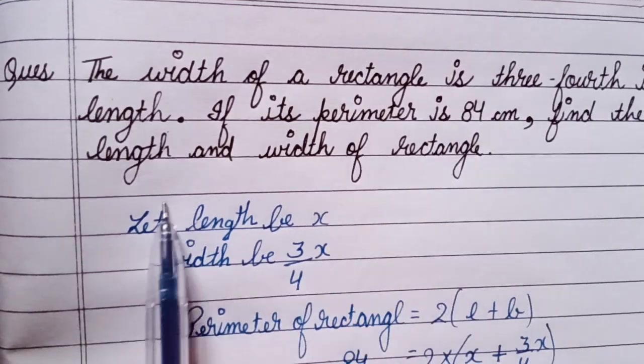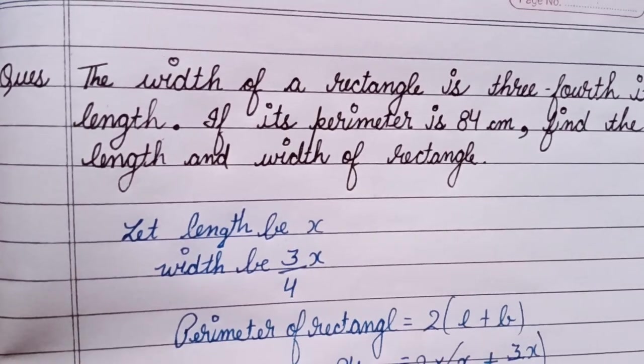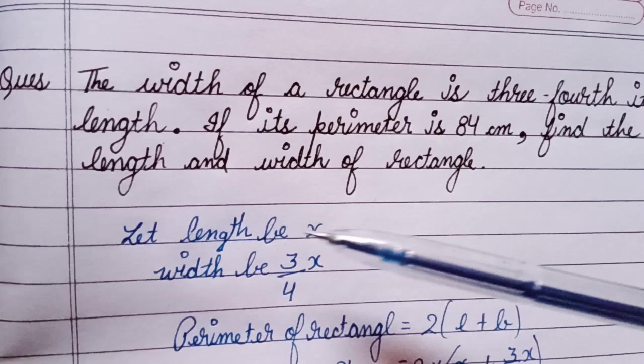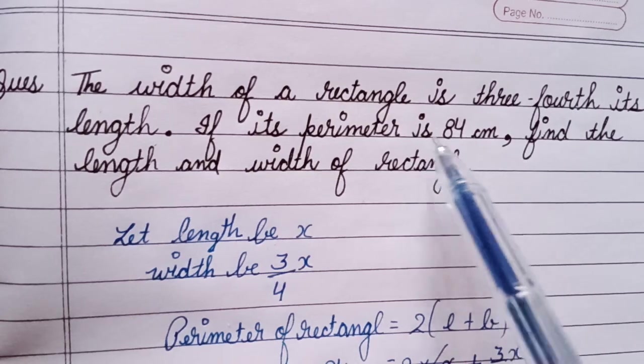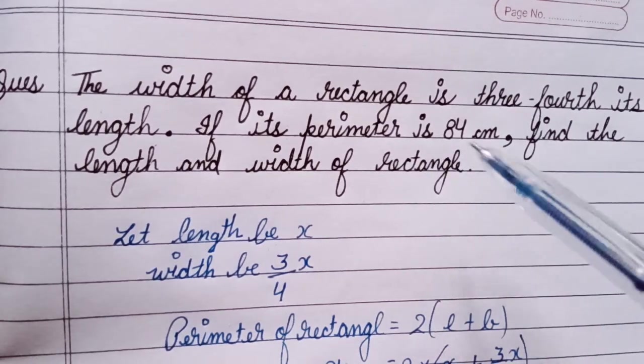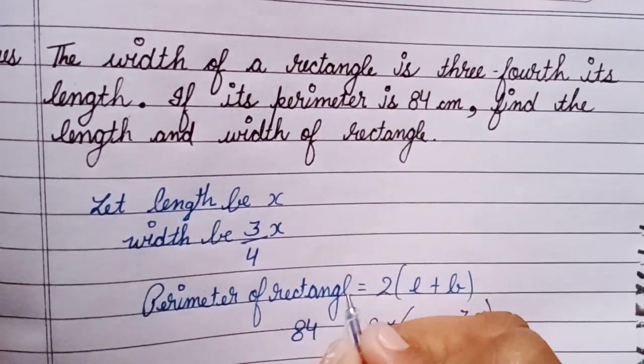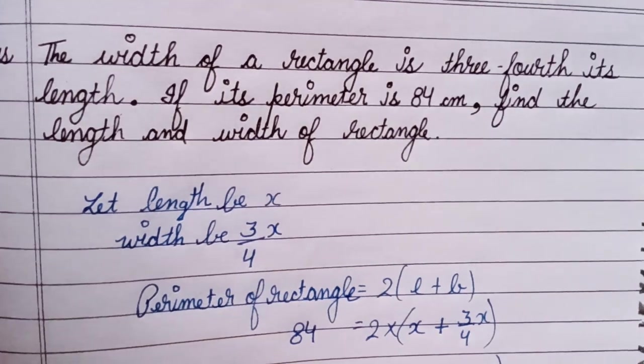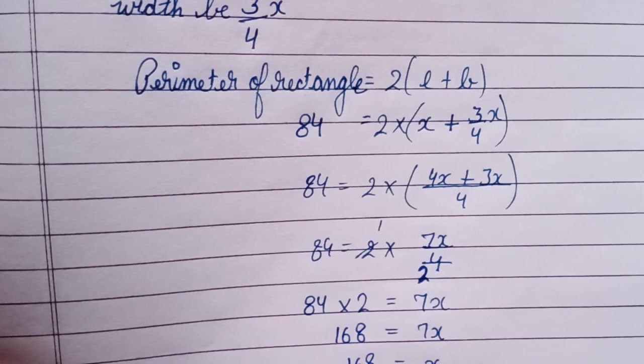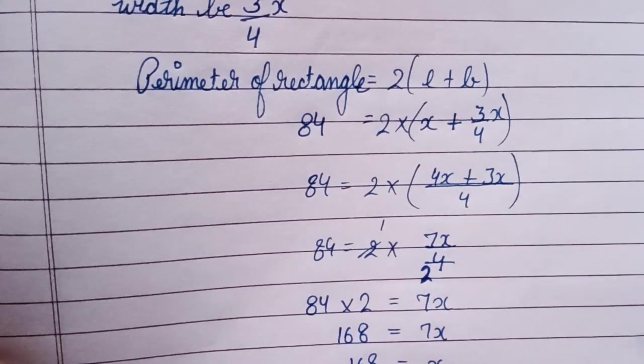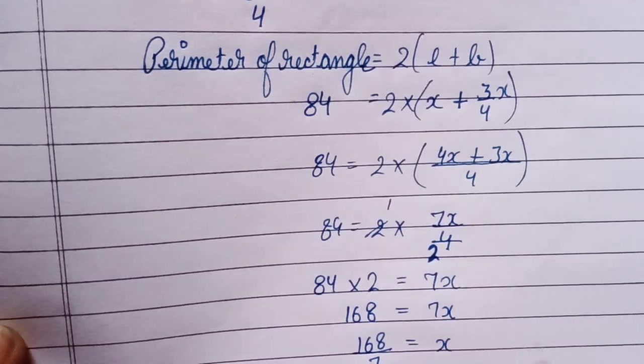If we have length x, then width is 3 upon 4x. If we have length x and width 3 upon 4x and we have perimeter, then we can use perimeter formula and x's value find out. So we have perimeter of rectangle formula and put values in it and x's value find out. Perimeter of rectangle is 2 into l plus b. We have according to x's value, when we know x's value, then x is our length.